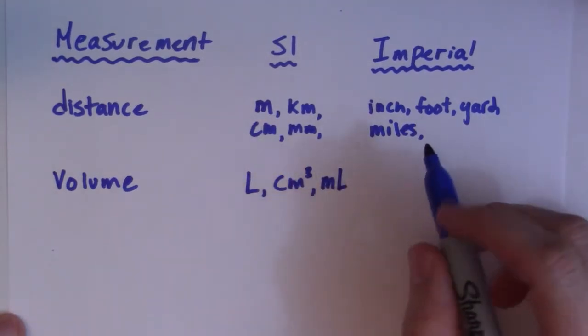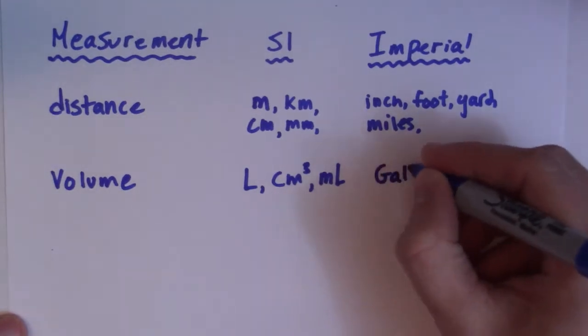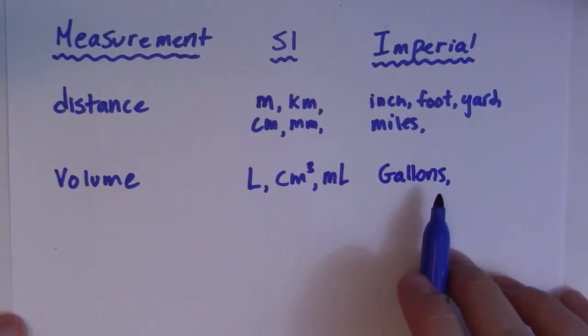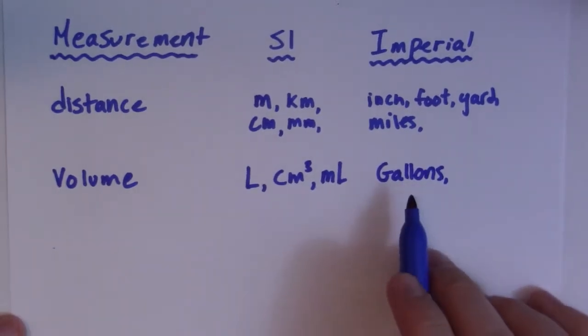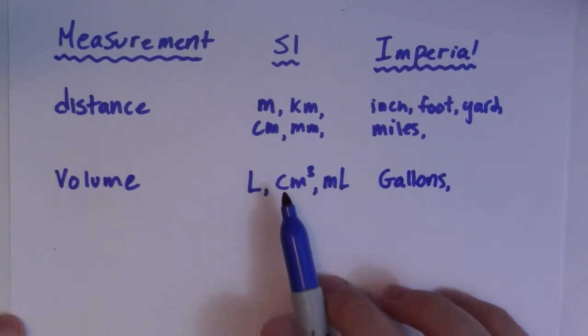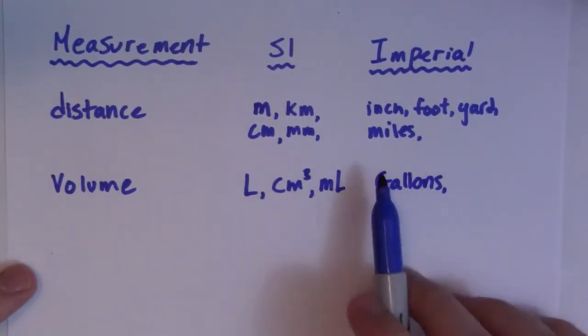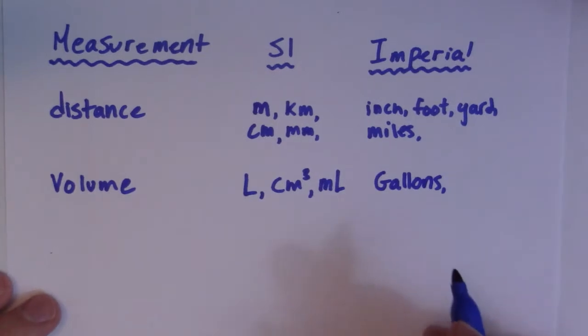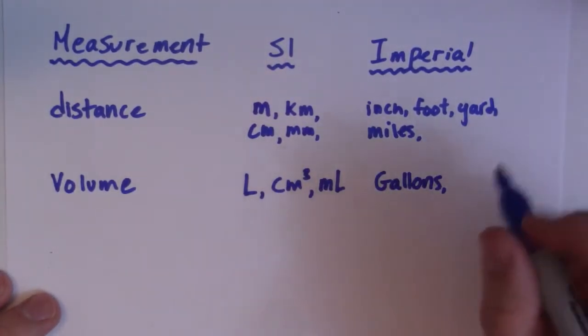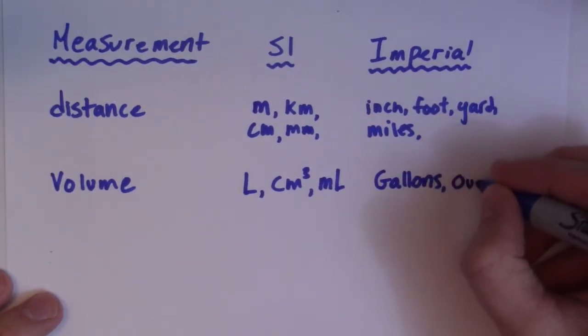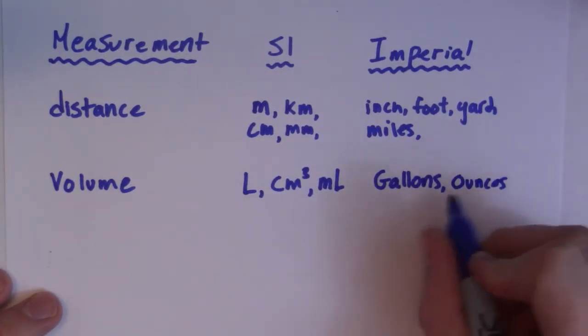In Imperial we have gallons, and I'm no Imperial expert, I did not grow up with this stuff for the most part. Our gas is measured in liters. You probably would know how many liters your snowmobile or truck takes. Most people would know in gallons in the United States, and you pay so much per gallon of gas. And the other one I think will be ounces, fluid ounces.